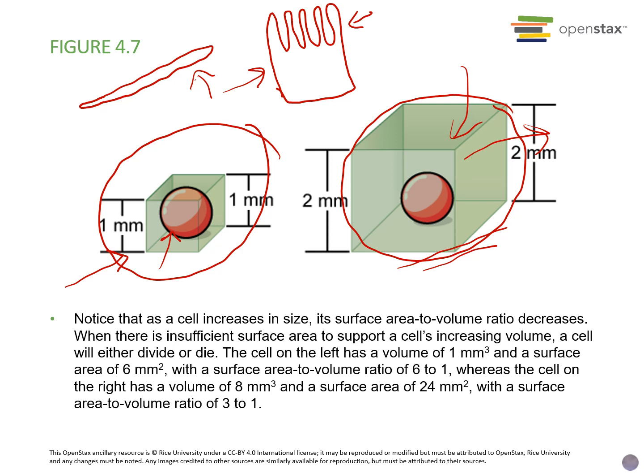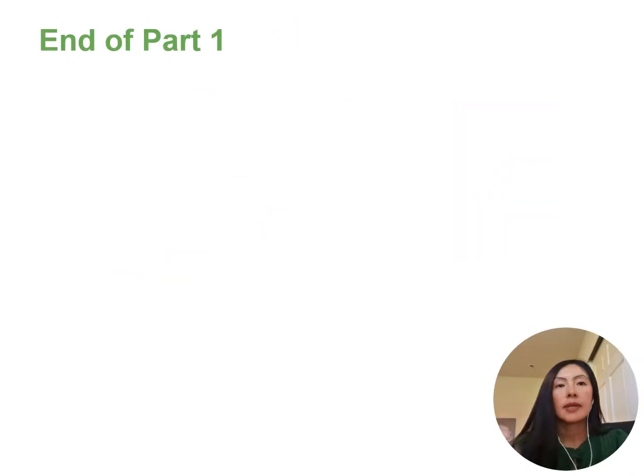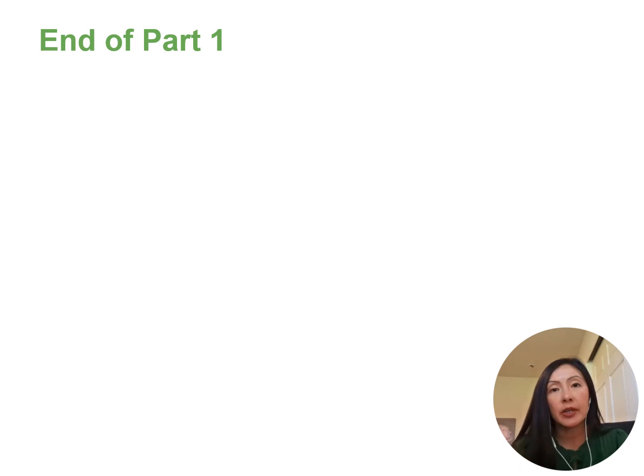Larger cells have many more organelles and structures inside the cell that allow them to get past this inefficiency. That takes us to the end of part one of chapter four. In the second video, part two, we're going to be going over eukaryotic cells in much more detail.